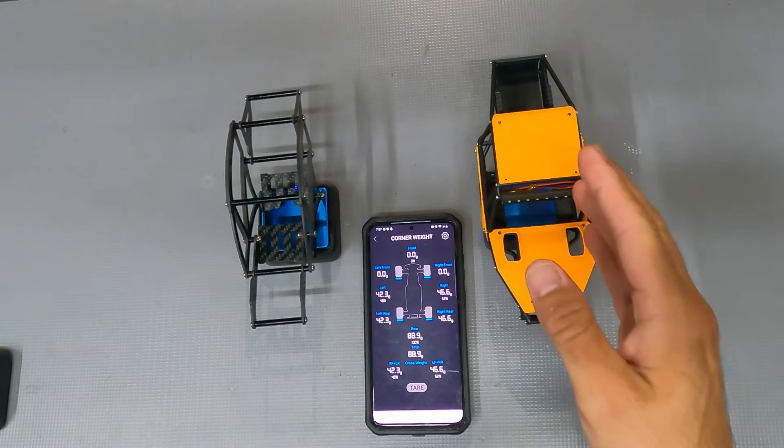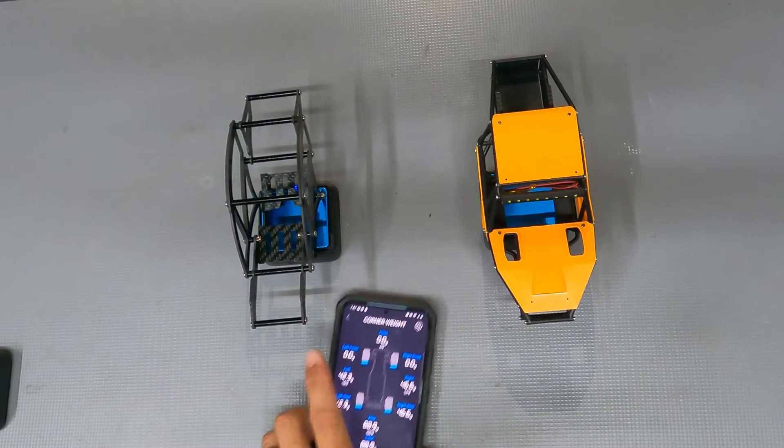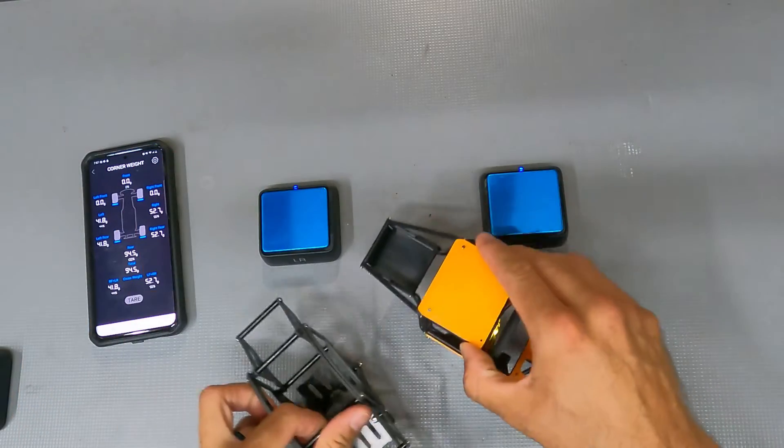And then the Tarantula is coming in at 46.6. So this is roughly four grams heavier than the Kangaroo is. And then let's go ahead and get some dimensions on these side by side.